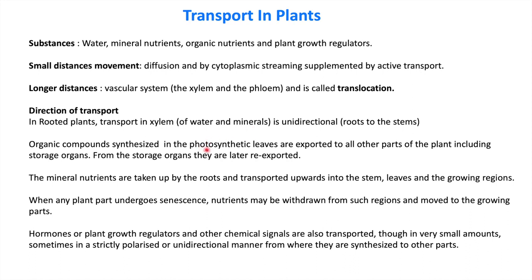Photosynthesis occurs in leaves, which create organic compounds. These organic compounds are transferred from leaves to different parts of the plant body and also to storage organs, from which they are further re-exported to different parts of the plant body.